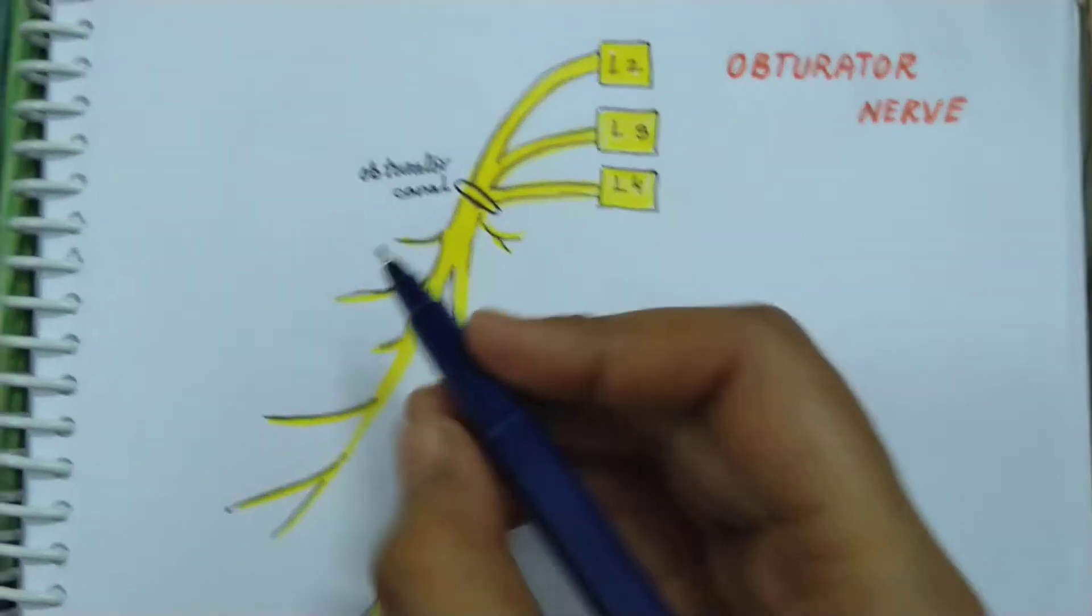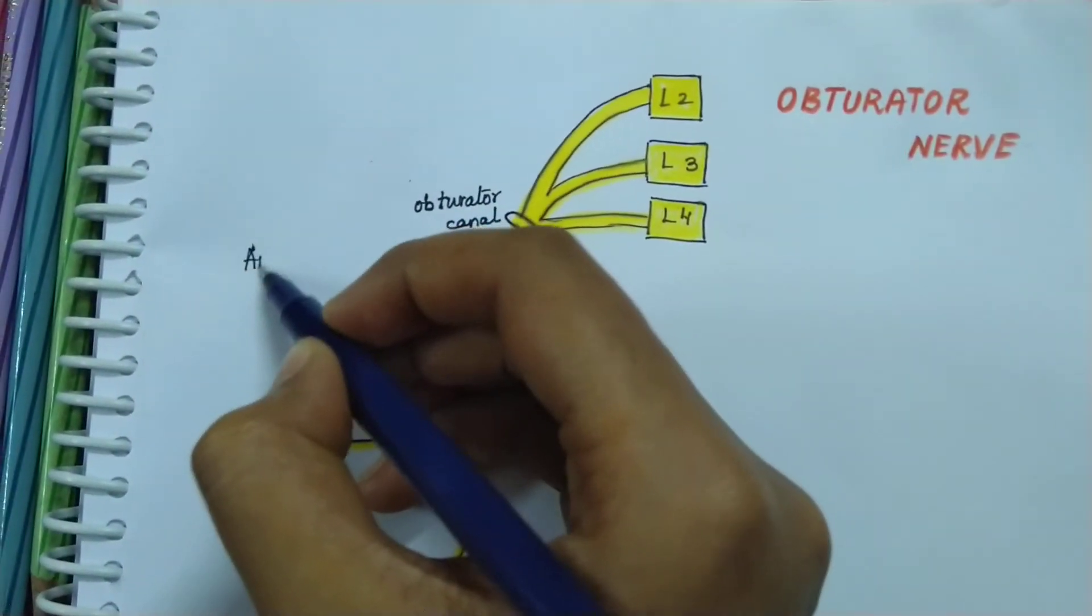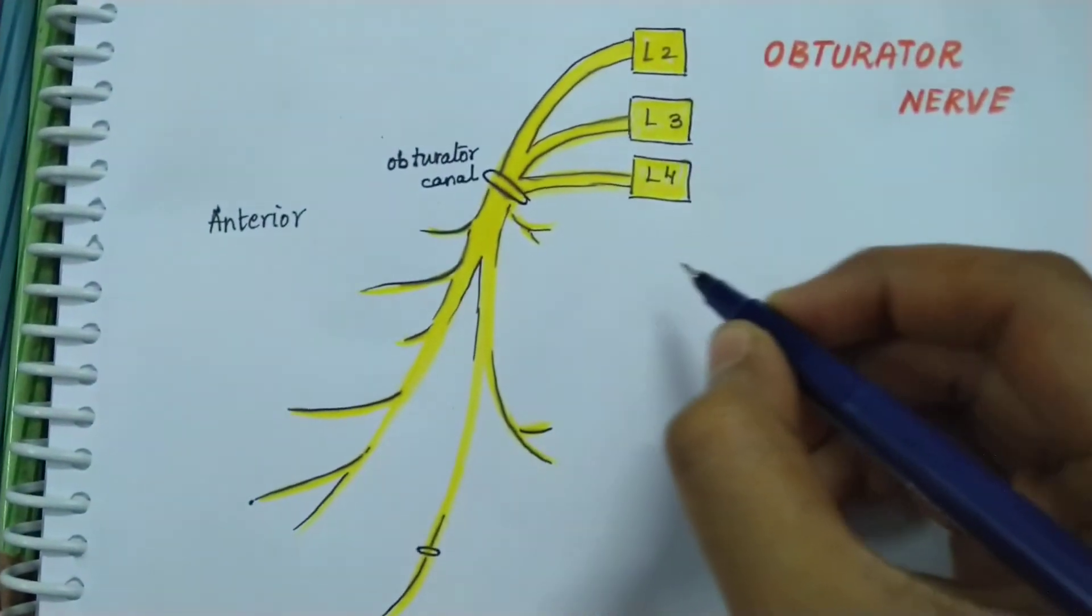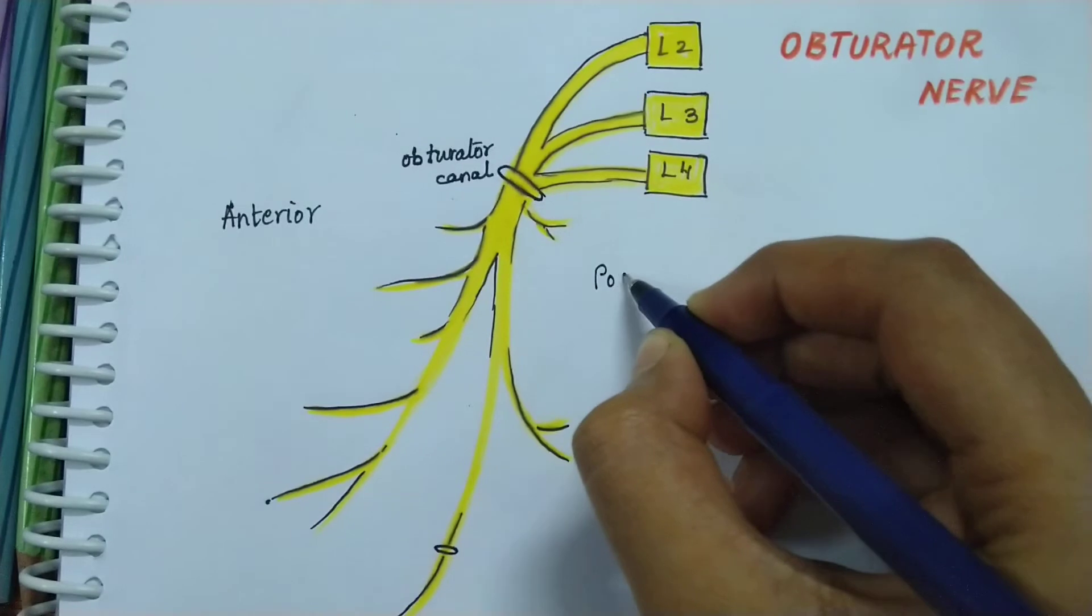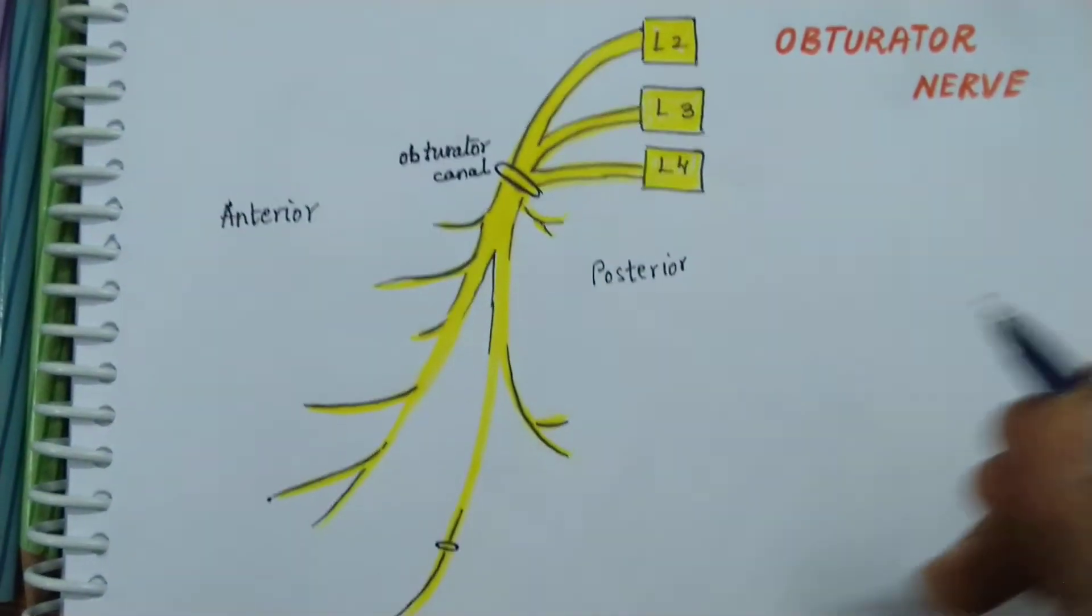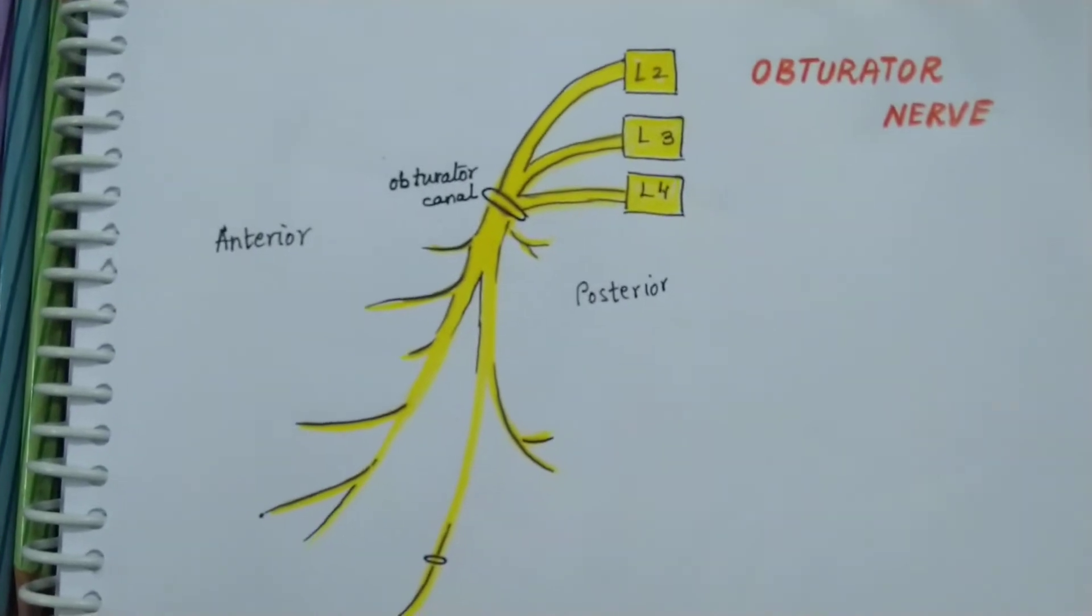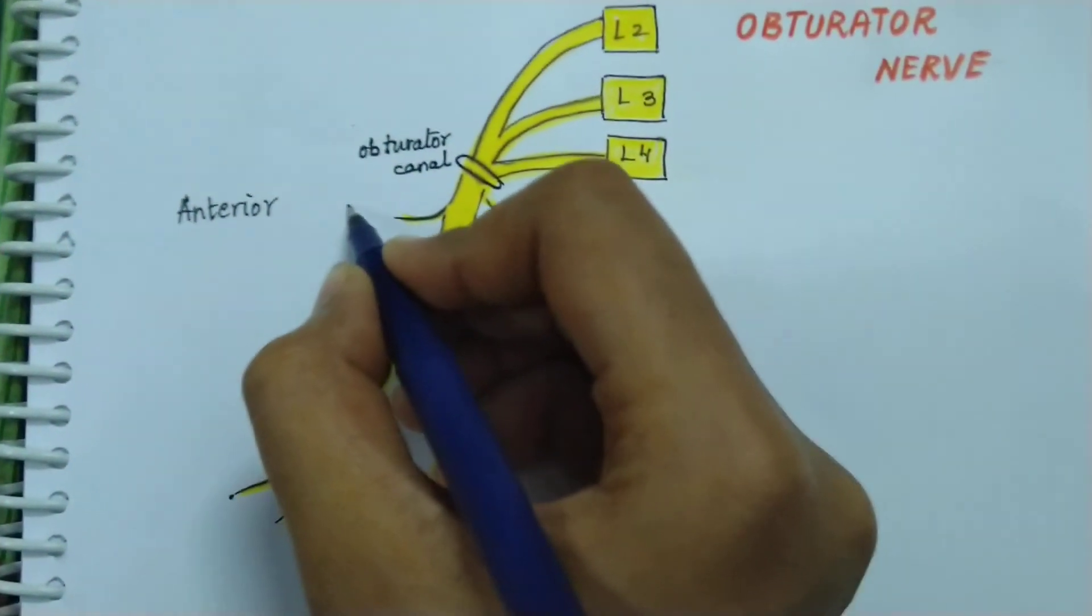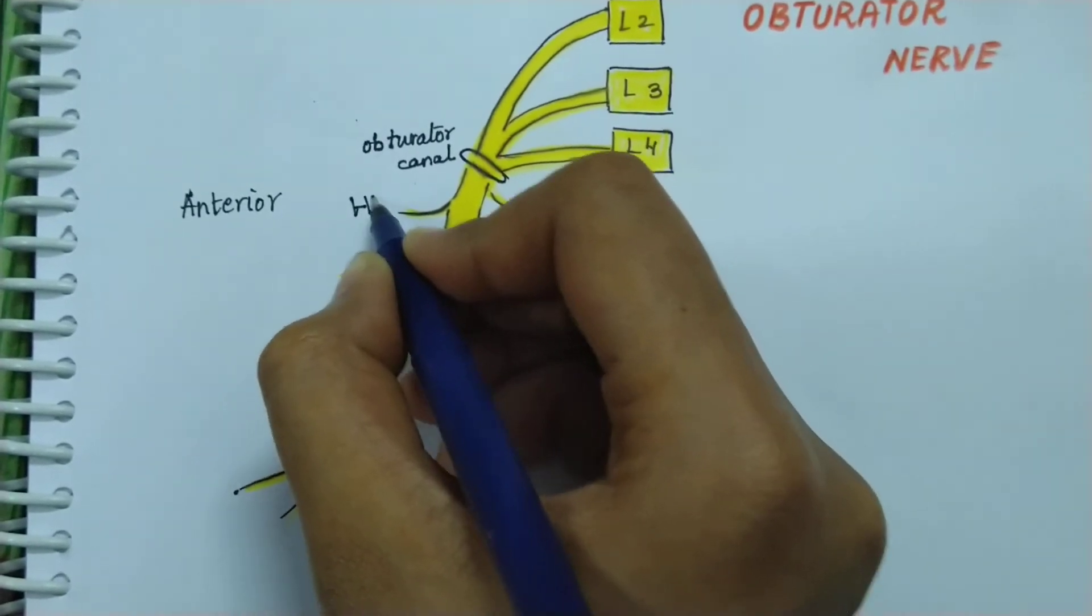It divides into the anterior division and the posterior division. This is the posterior division. Now coming to the anterior division, it gives an articular twig to the hip joint.